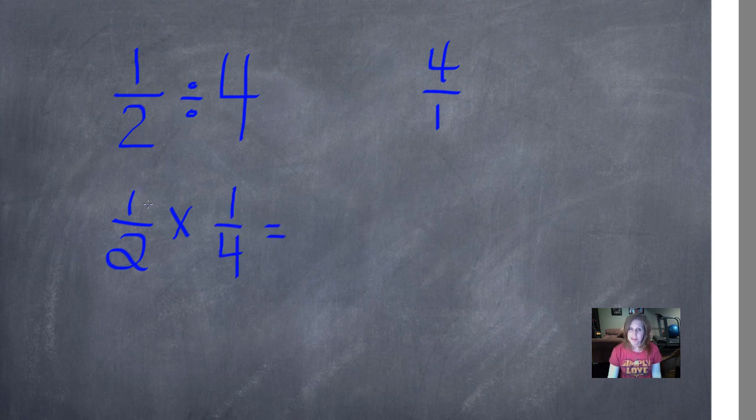Then we multiply straight across. 1 times 1 is 1. 2 times 4 is 8. So 1 half divided into 4 parts is 1 eighth.